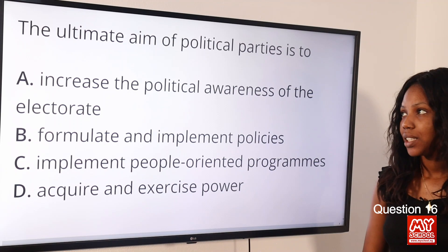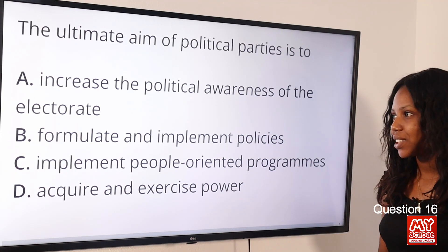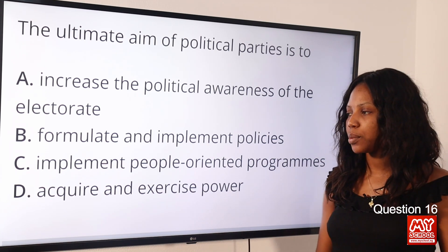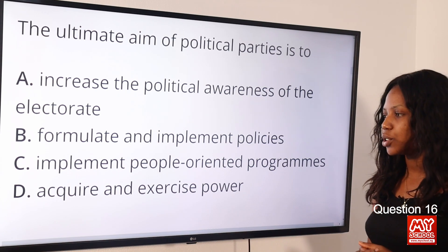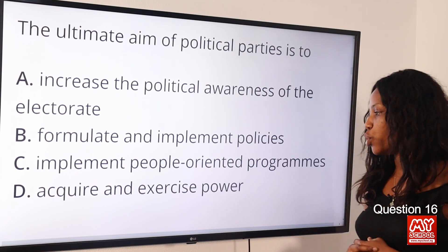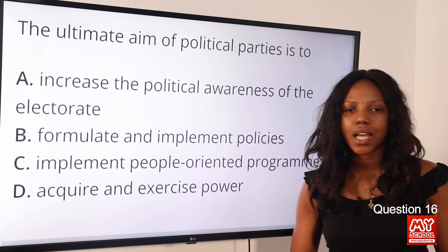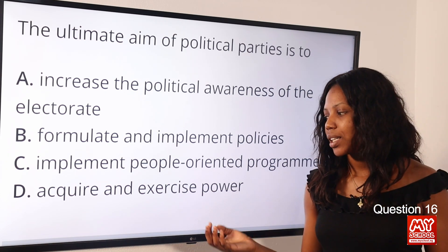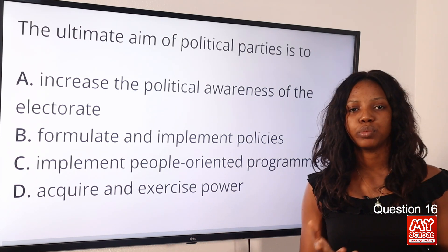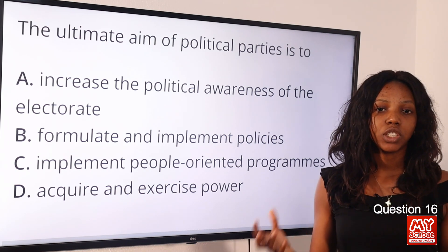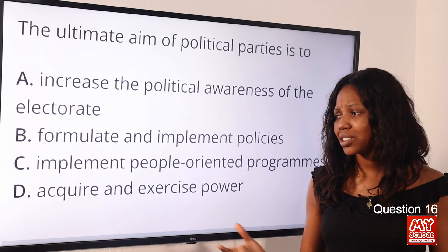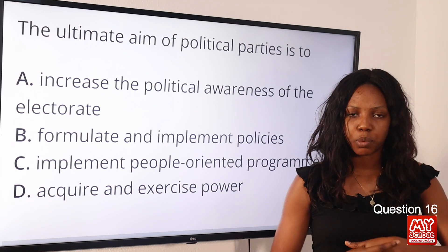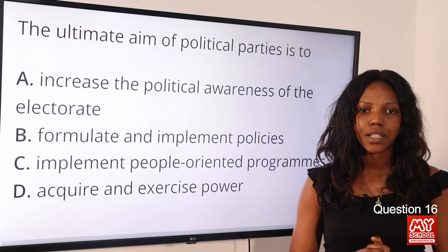Question 16: The ultimate aim of political parties is to — option A: increase the political awareness of the electorate; option B: formulate and implement policies; option C: implement people-oriented programs; option D: acquire and exercise power. The answer is option D. Every political party wants to be the ruling party and control the government, so their ultimate aim is to acquire and exercise power.